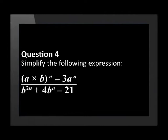Question 4. Simplify the following expression. In brackets, we have a times b to the power of n minus 3, times a to the power of n, over b to the power of 2n plus 4, times b to the power of n minus 21.